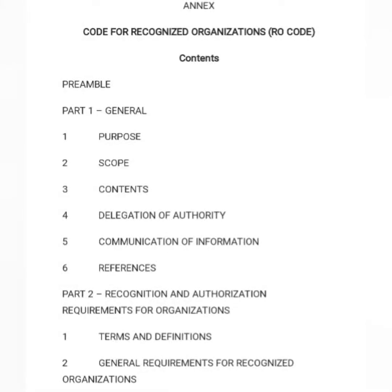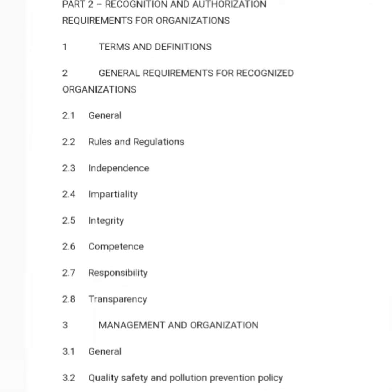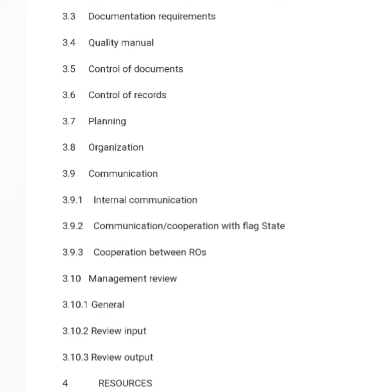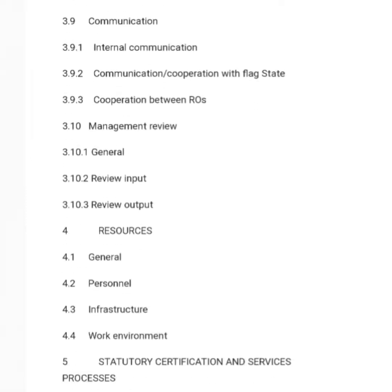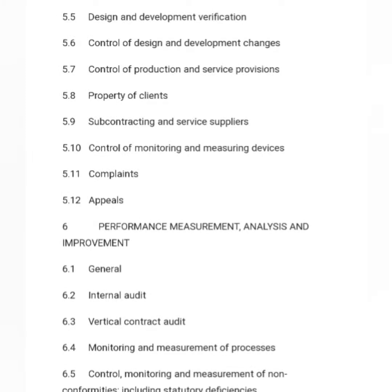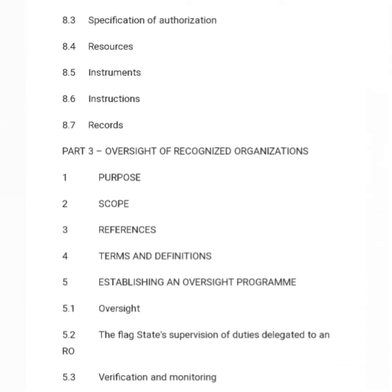Then there's part two, which is about recognition and authorization requirements for organizations. So if an organization wants to be recognized and get the authorization to carry out surveys and give certification on behalf of the flag state, then they need to follow this particular code. As you can see, there are terms and definitions, general requirements for the recognized organizations, then a management and organization system, which I will discuss in detail a bit later. Then it talks about the resources, statutory certification and services, performance measurement and analysis to ensure they keep improving, quality management system certification for the RO, and authorization of the recognized organization.